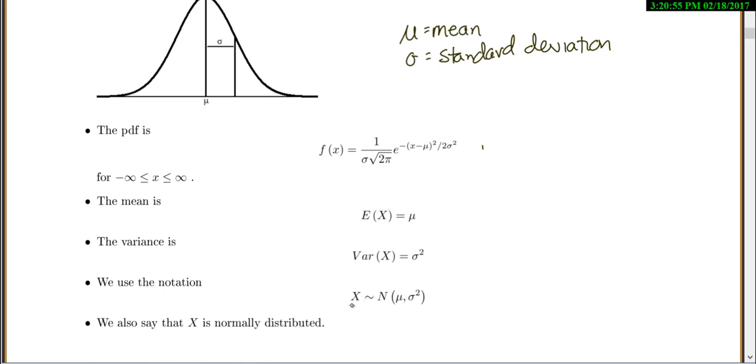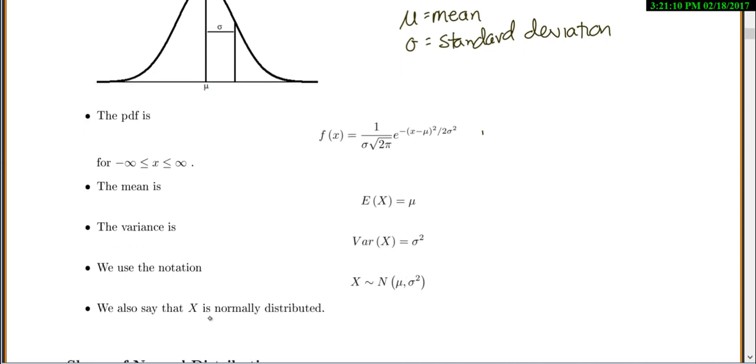We'll use this notation. X is normally distributed with a mean mu and sigma squared. We'll write the variance here in the second part. Some books write the standard deviation in the second part, so you just need to pay attention to what book you're using. We'll say that x is normally distributed.